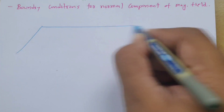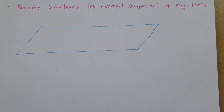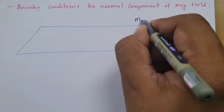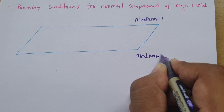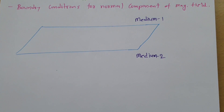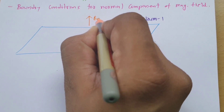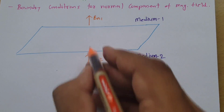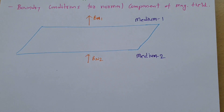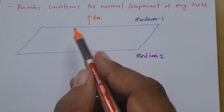To understand boundary conditions for the normal component, let me draw a plane separating two media. Medium one is above the plane and medium two is below the plane. In medium one the normal component is BN1, and in medium two it is BN2. We need to find the relation between BN1 and BN2.